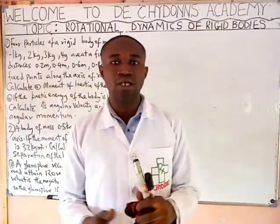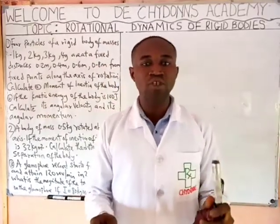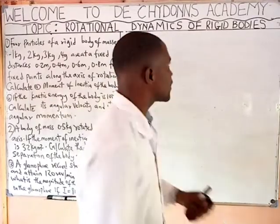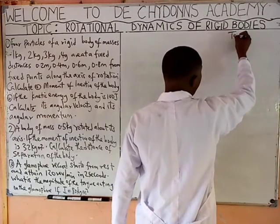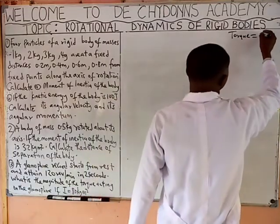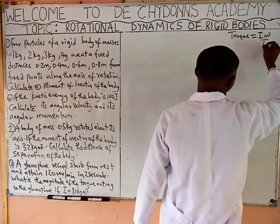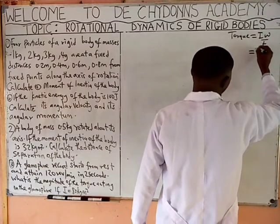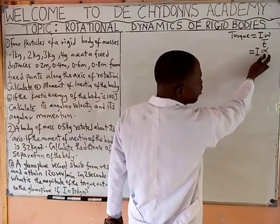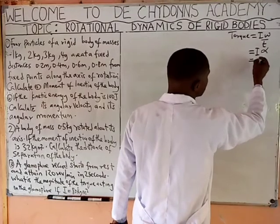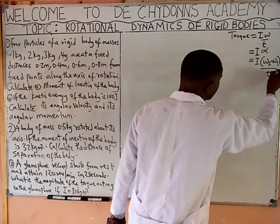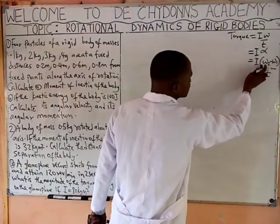Welcome again to the calculation on the topic rotational dynamics of rigid bodies. To solve any question on this topic, write down the formulas you need. Torque equals Iω over t, or it gives us I·alpha where alpha is the angular acceleration, and also I bracket (ω₂ minus ω₁) all over t — that is the rate of change of angular velocity.